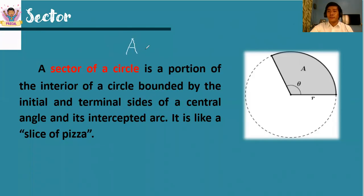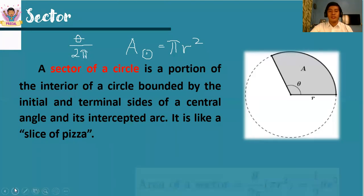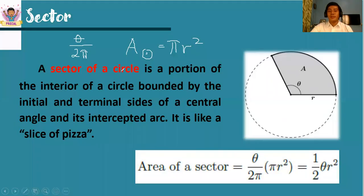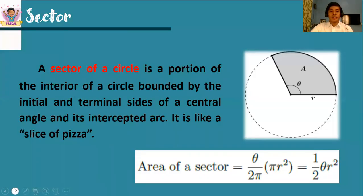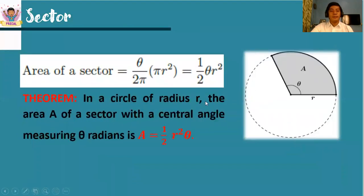The area of a circle is equal to pi r squared. We will relate it to theta over the complete revolution 2 pi. So for the area of the sector, that will be theta over 2 pi times pi r squared. We can cancel pi, and what will remain is one half theta r squared. So in theorem, the area of the sector in a circle of radius r, with a central angle — remember that it must be in radian measure — is A is equal to one half r squared theta.